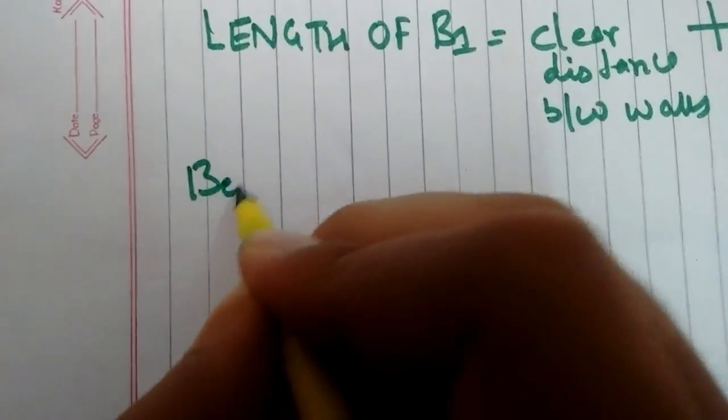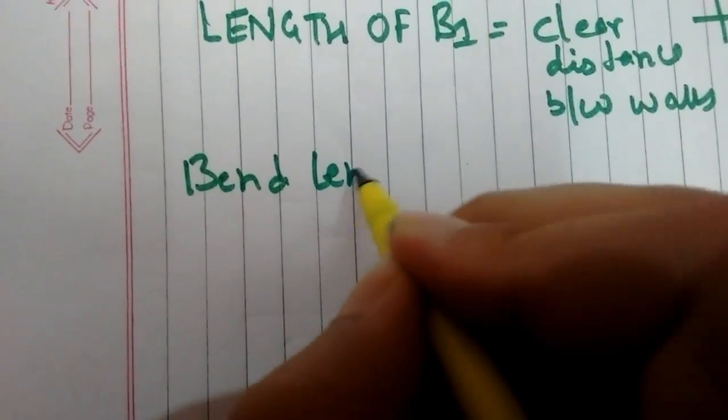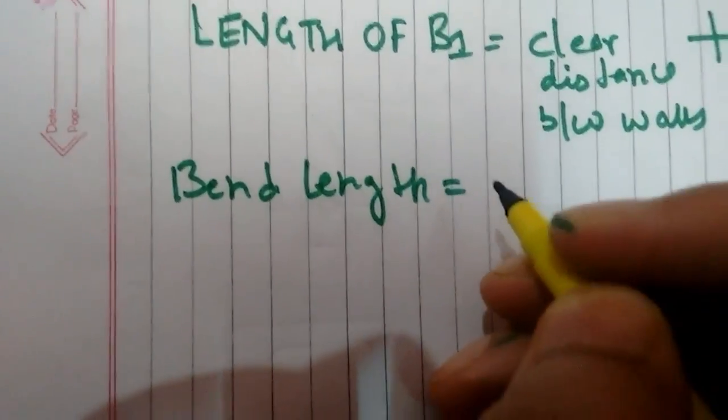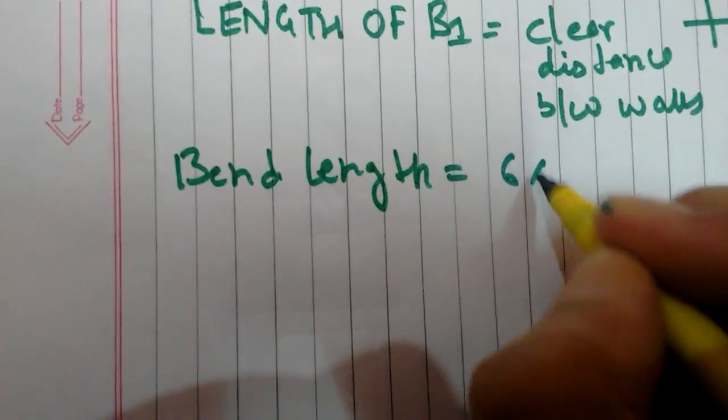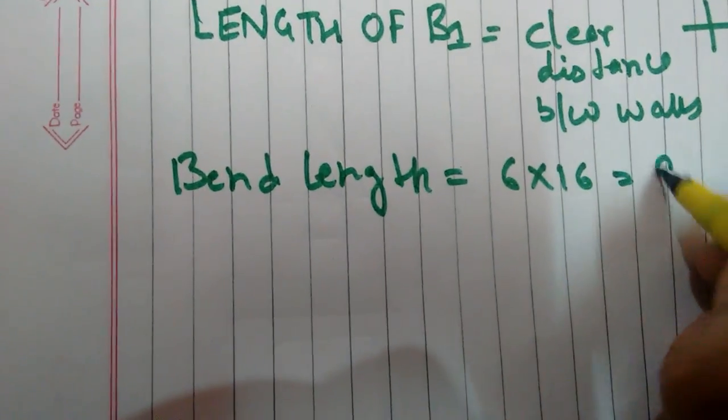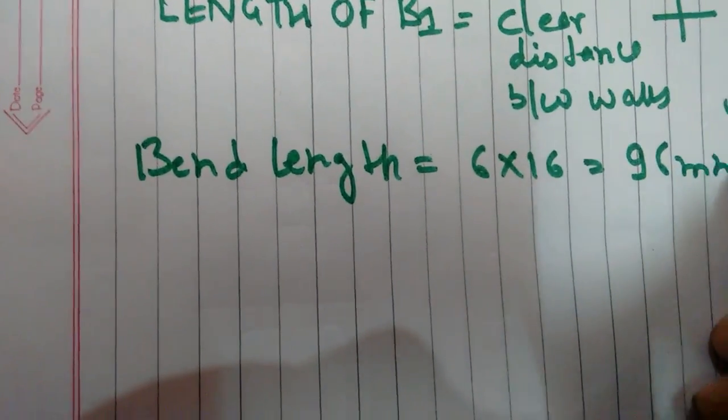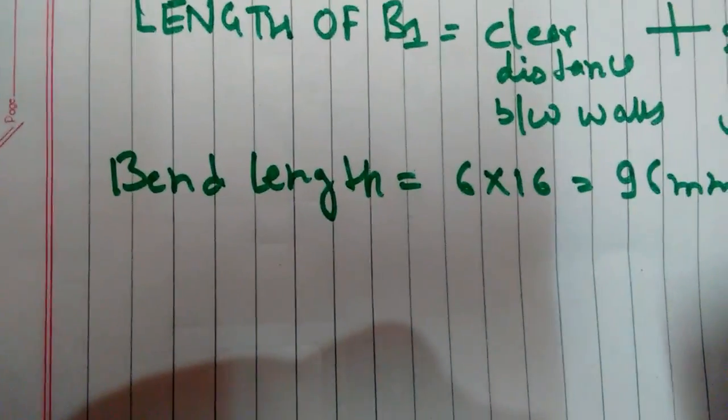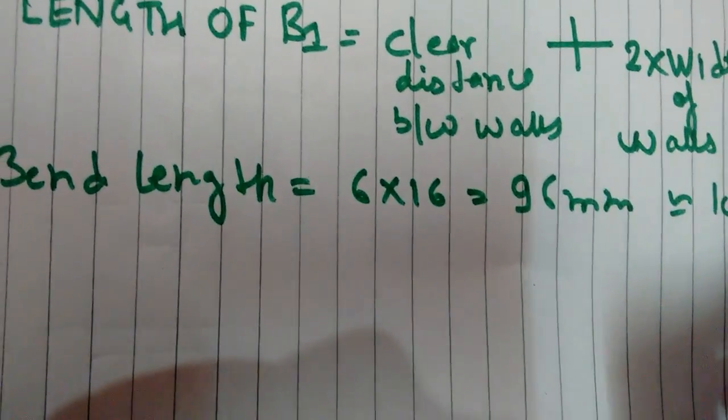So we are taking as 100mm. This is the bend length, so bend length is calculated as 6 times diameter of bar.